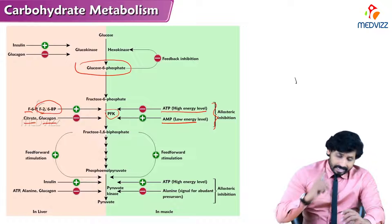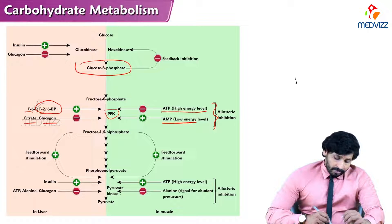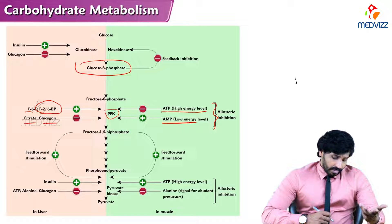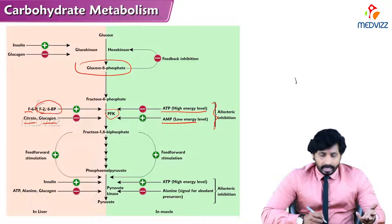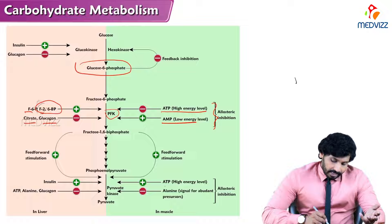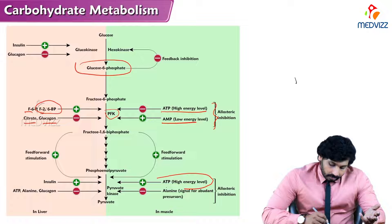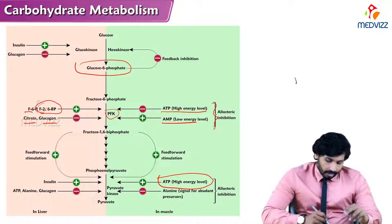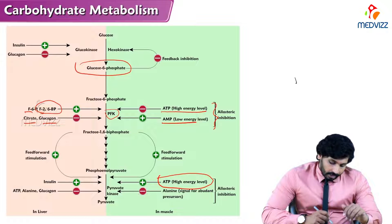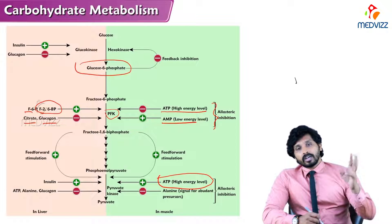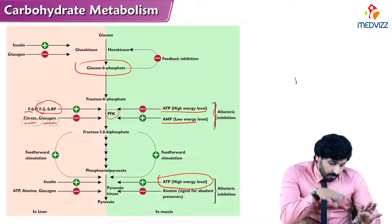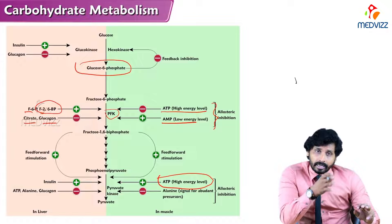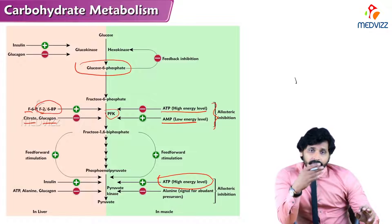The tenth step — pyruvate kinase — is promoted by insulin and inhibited by glucagon. It is also regulated by ATP and alanine, where high ATP levels are inhibitory and alanine also inhibits pyruvate kinase. These act via allosteric inhibition. Regulation differs between liver cells and skeletal muscles.